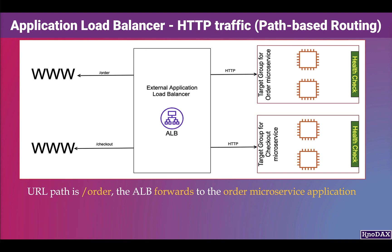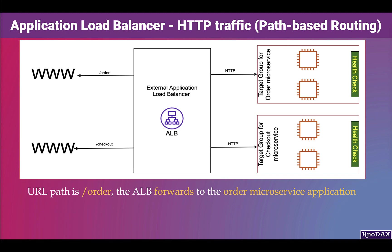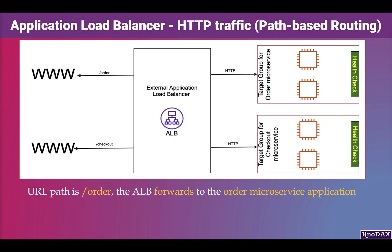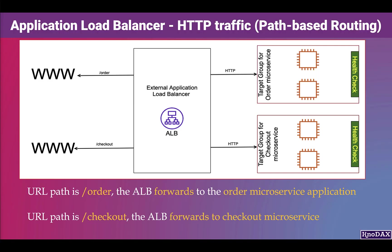Let's look at how Application Load Balancer forwards traffic using path-based routing. In the diagram for an External Application Load Balancer handling HTTP traffic, there are two target groups. When the URL path is /order, the ALB forwards to the target group where the order microservice is deployed. When the path is /checkout, it forwards to the target group where the checkout microservice is deployed.